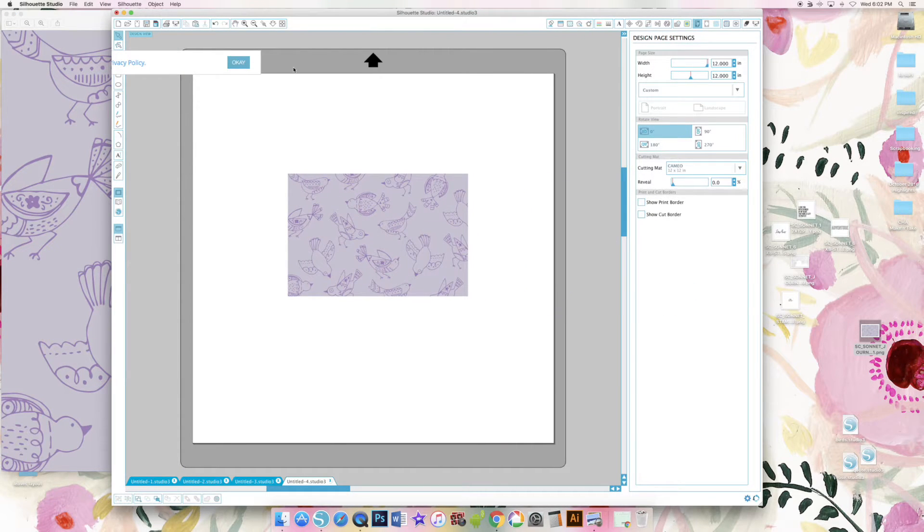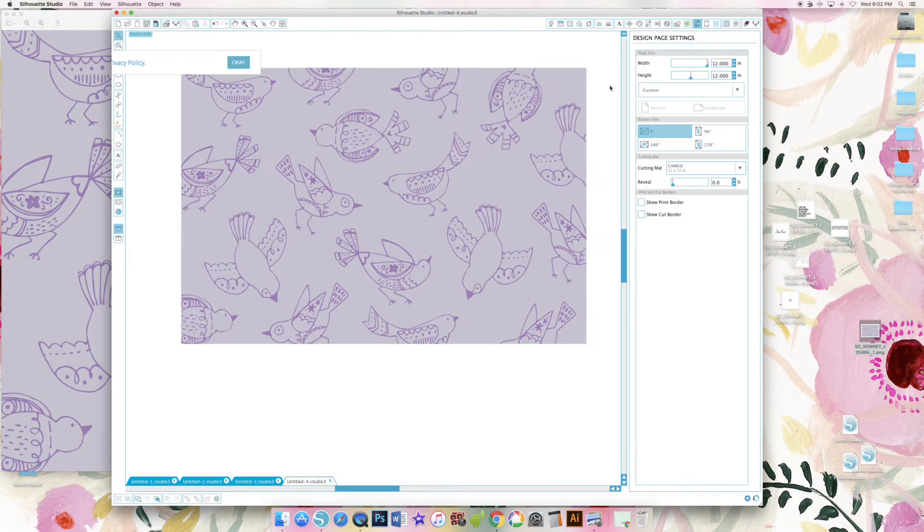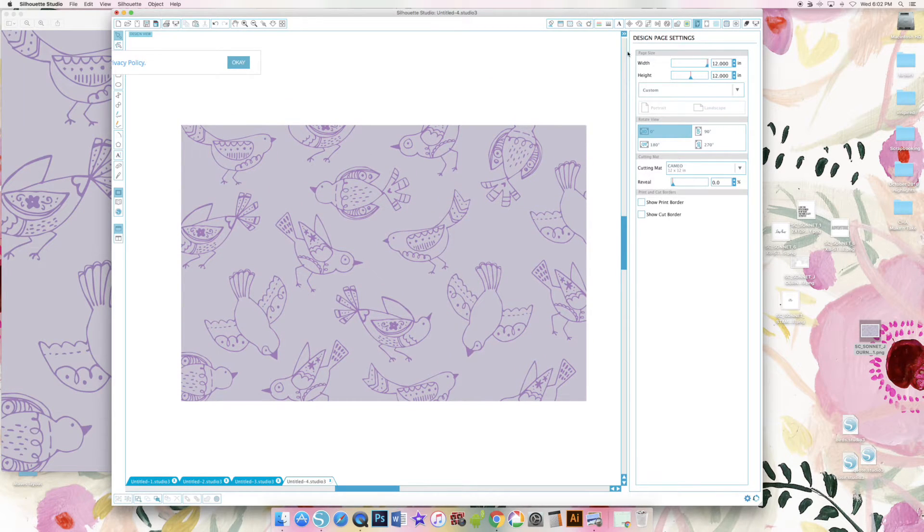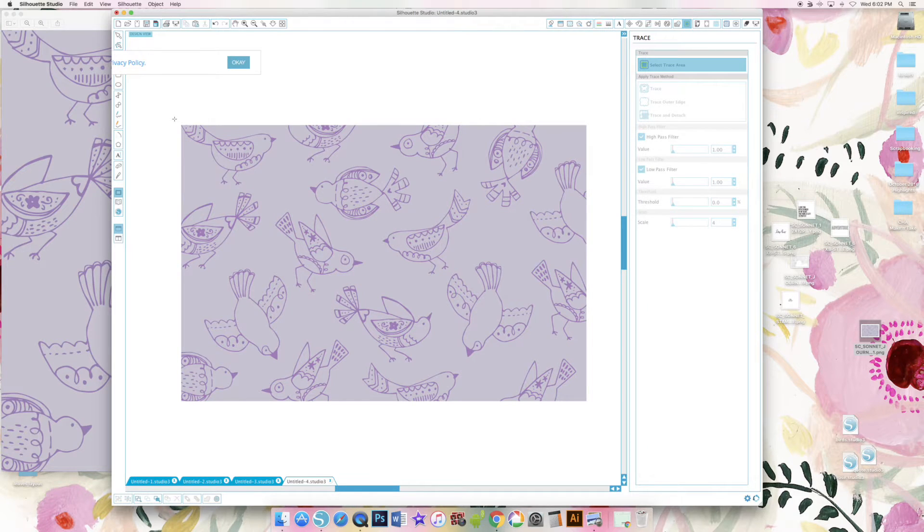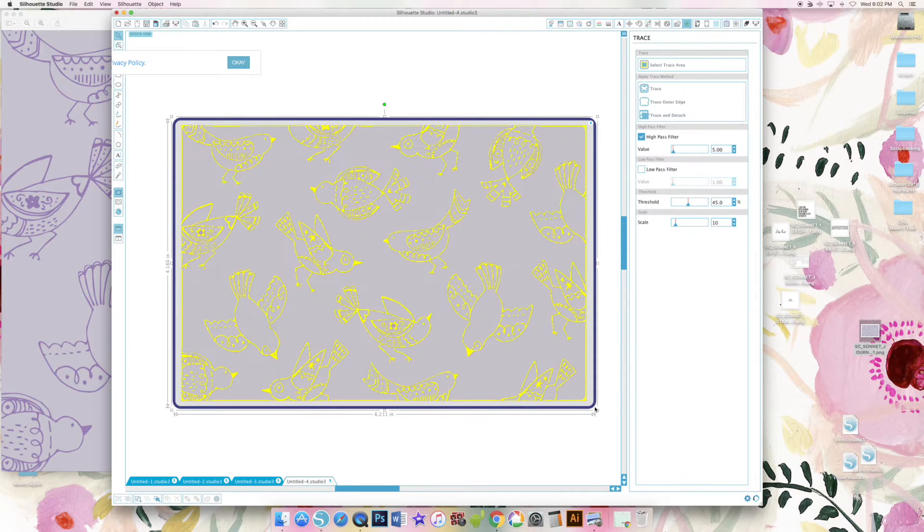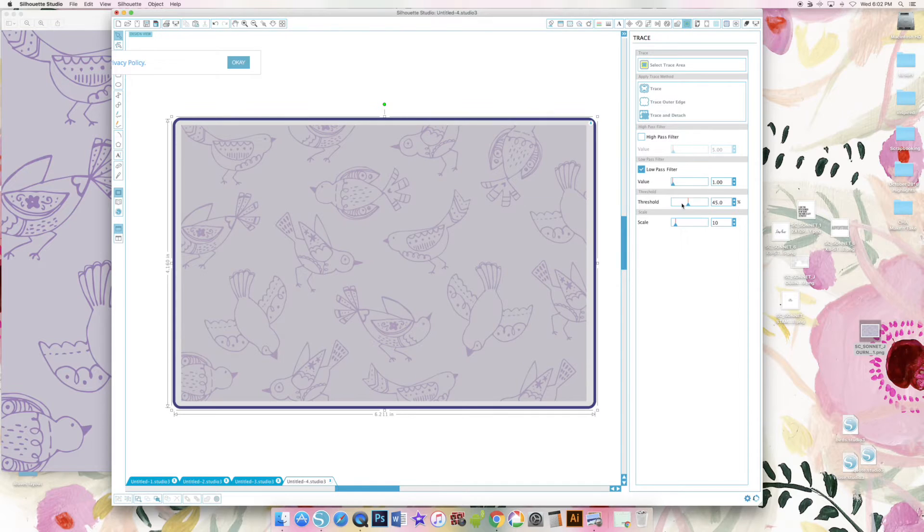So drag and drop it into a new Silhouette Studio file. I've zoomed in a little bit and now I need to trace the birds. So click on the trace button, select the trace area, and use your cursor to draw over the entire thing.